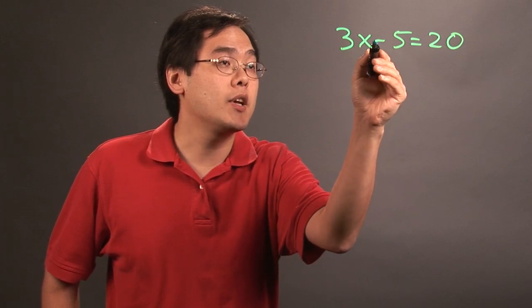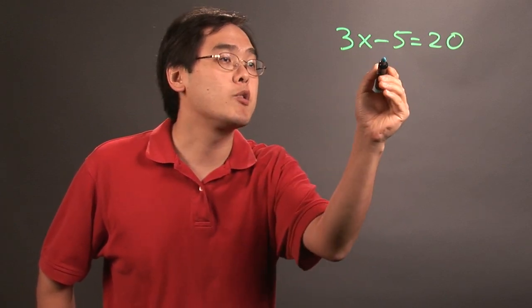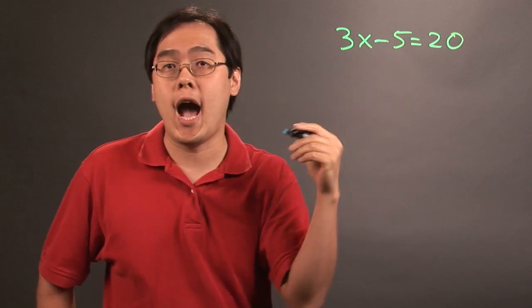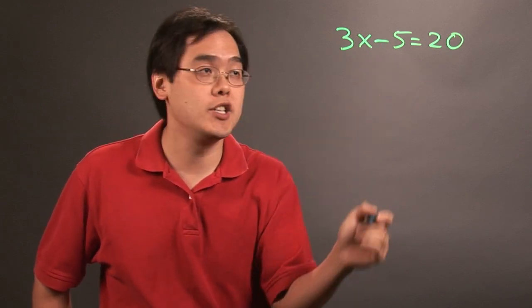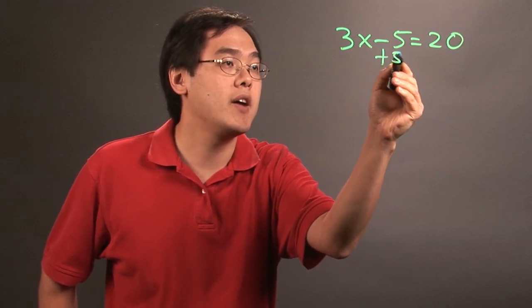Now in this particular scenario you want to take care of the subtraction part first to solve for x, which means you want to go with the opposite operation of subtraction, which is going to be addition. So get rid of the non-x related terms. You're going to add 5 to both sides.